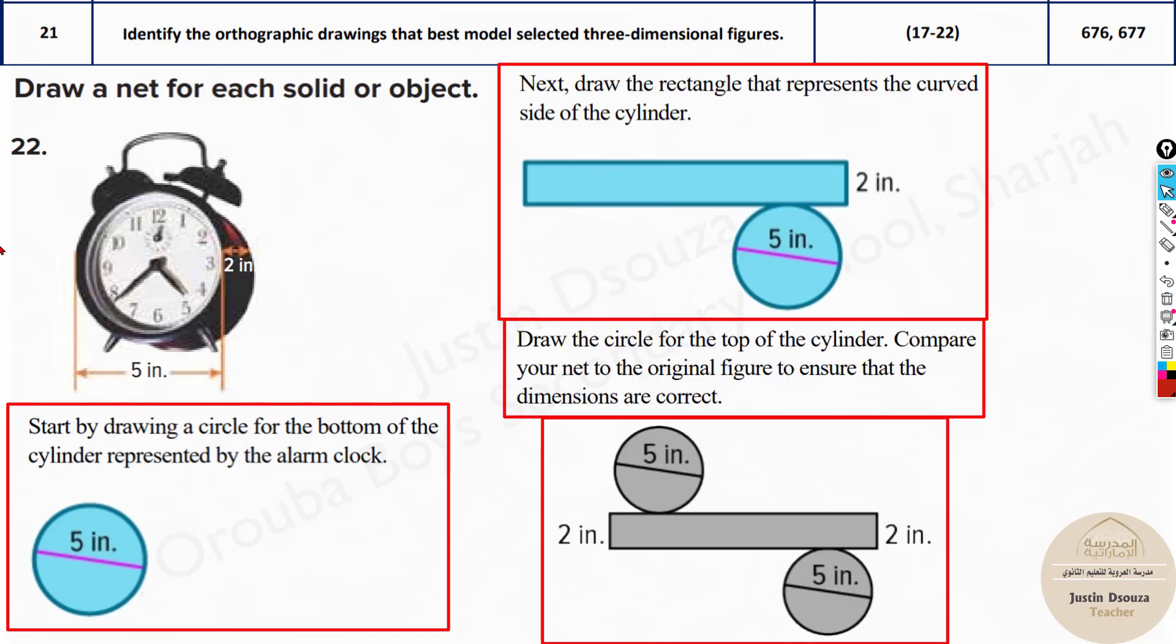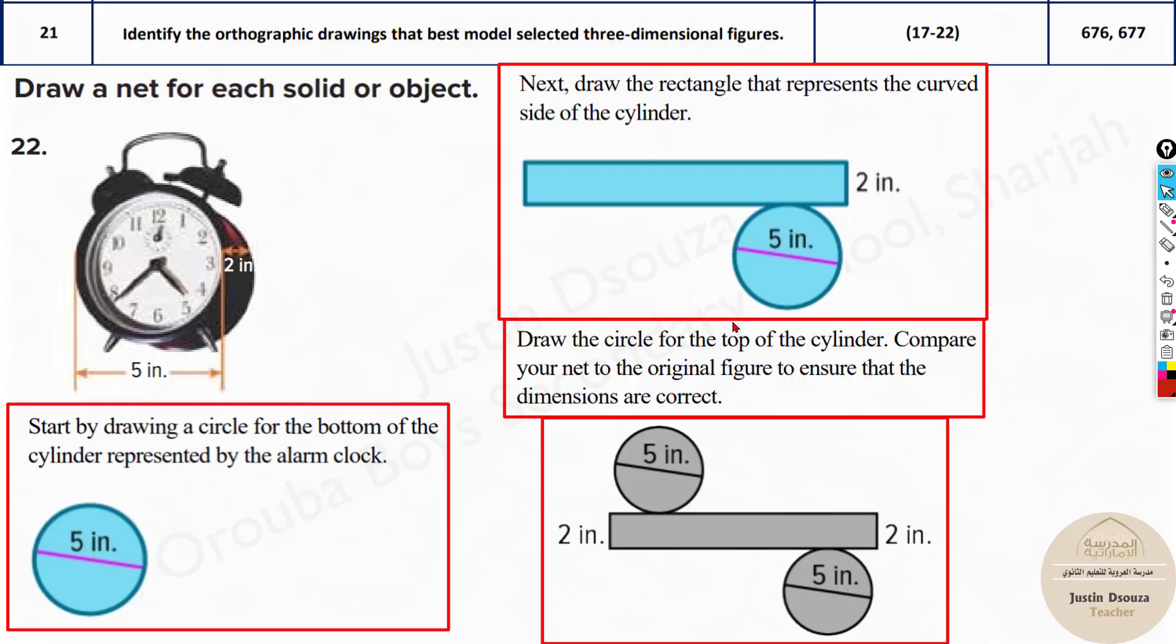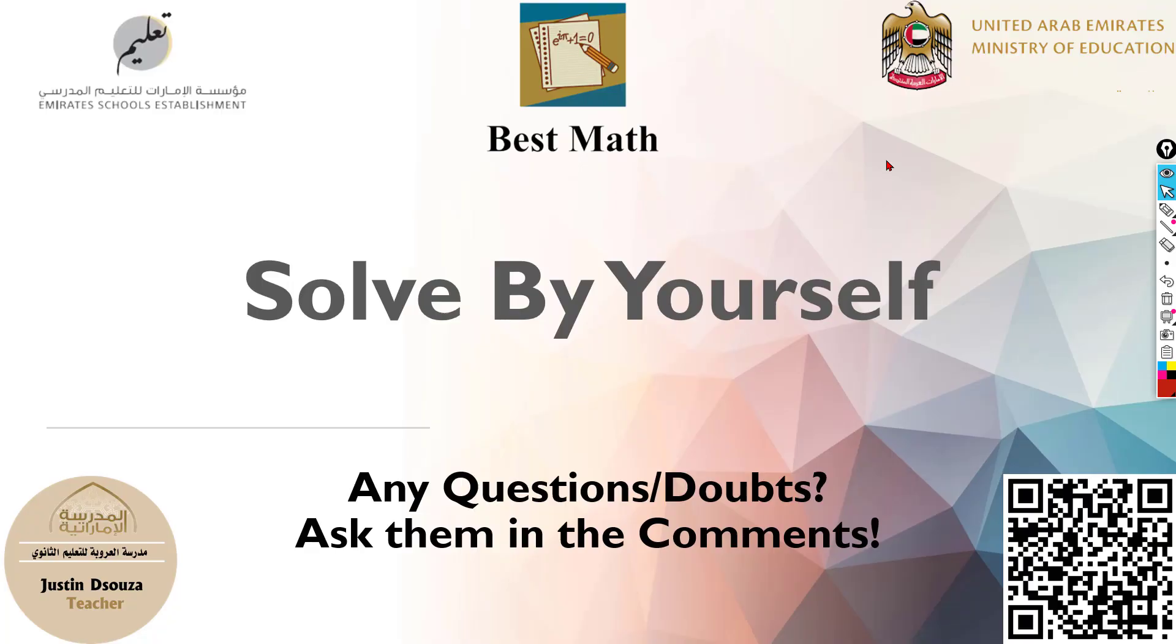So if you're thinking, how is this? See, this is the circular base. Then this part, can you see this thin part, right? It's 2 inches. So that is opened up. And then again, the diameter of this is 5 inches. So that's it. This is just a simple understanding problem. Please try to understand how you're opening up the solid figures and then you can easily solve it up.